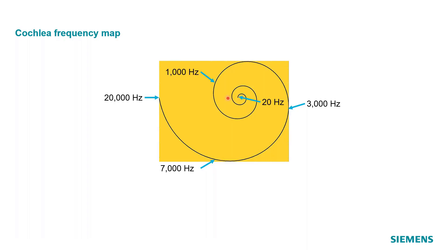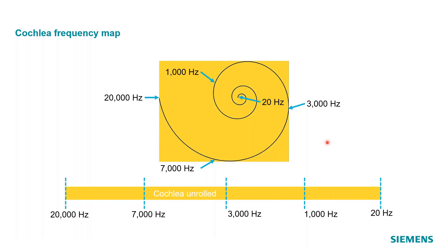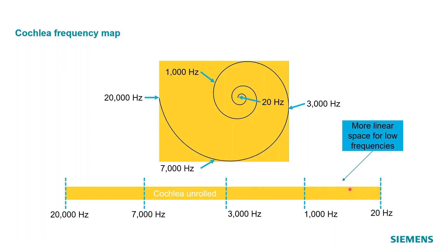These are rough numbers, but if we were to unroll this cochlea flat on a table and look at these frequency values, we'd see low frequency at the far right and high frequency on the far left. Looking at intermediate values — 1 kHz, 3 kHz, 7 kHz — we notice they're not linearly spaced. There's a lot more linear space per frequency at the low end. For example, roughly two inches might cover only 1,000 Hz at the low end, whereas that same two inches covers 13,000 Hz at the high end. Our brain can't distinguish individual tones at the high frequency end as well as it can at the low end, simply because of how much linear space is devoted to each frequency on the cochlea.